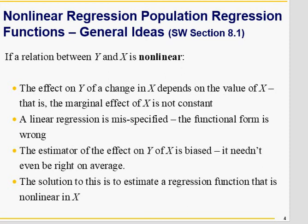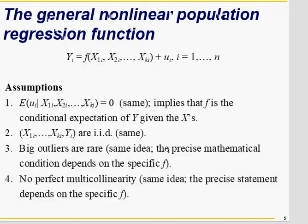The assumptions remain the same: X and U are independent, meaning the covariance between X and U is zero. Large outliers are not allowed — you can watch my previous videos on this. No perfect multicollinearity, but a moderate level of multicollinearity must be present.